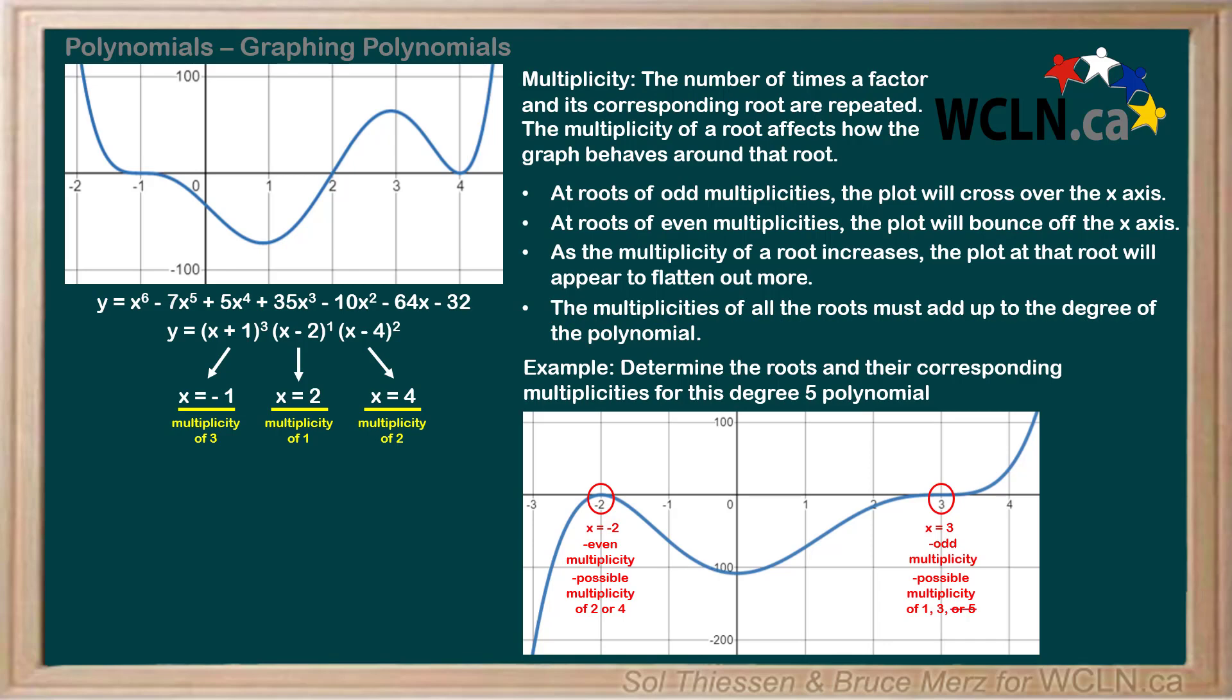We can eliminate the multiplicity of 5, since we know the function has another root with multiplicity 2 or 4, and 5 plus 2 or 4 will be greater than the degree, 5.